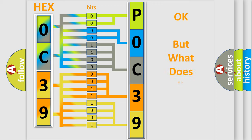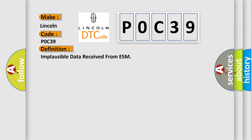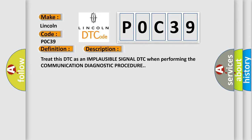The number itself does not make sense to us if we cannot assign information about what it actually expresses. So, what does the Diagnostic Trouble Code P0C39 interpret specifically for Lincoln car manufacturers? The basic definition is: implausible data received from ESM. Treat this DTC as an implausible signal DTC when performing the communication diagnostic procedure.